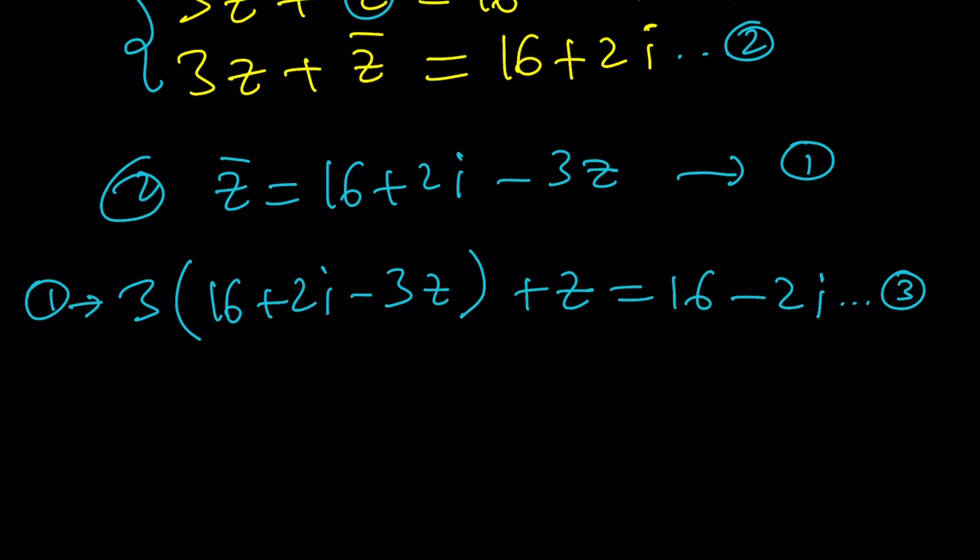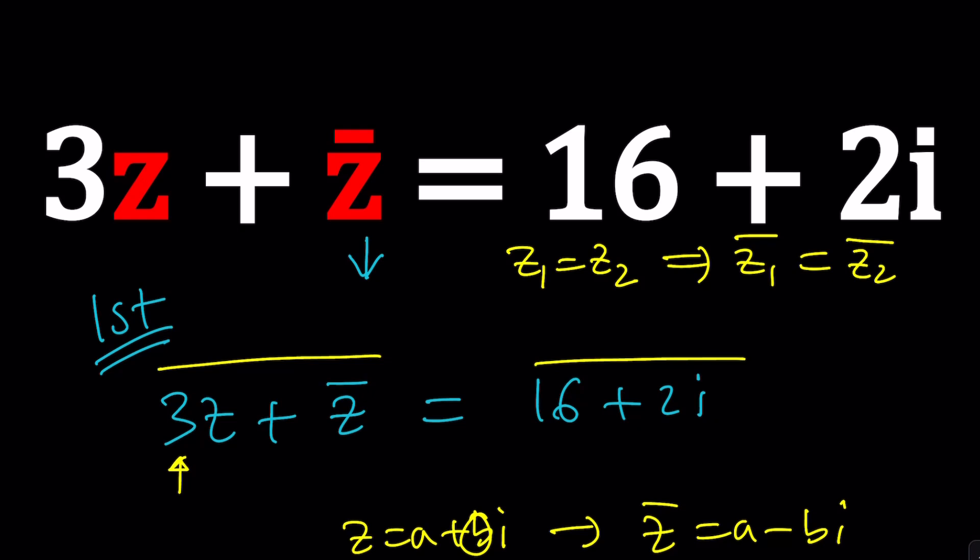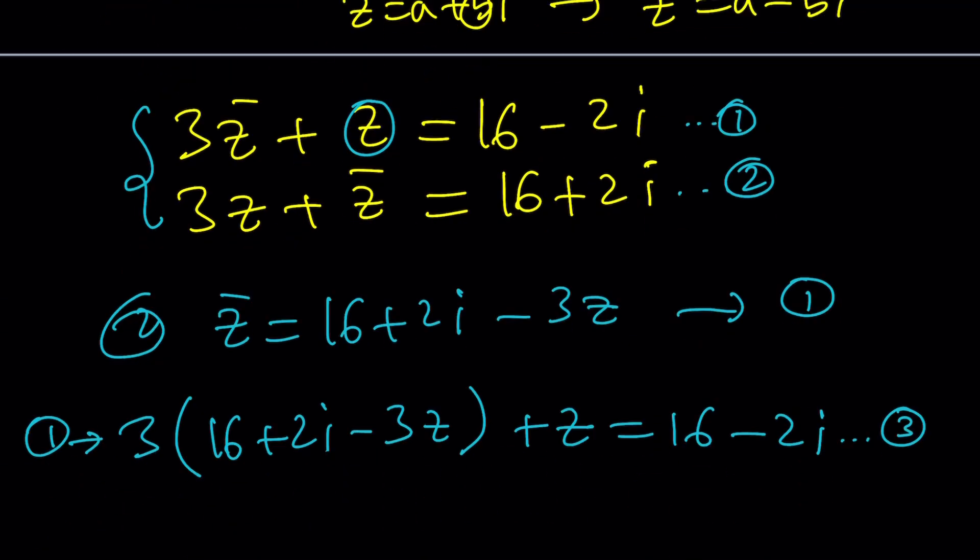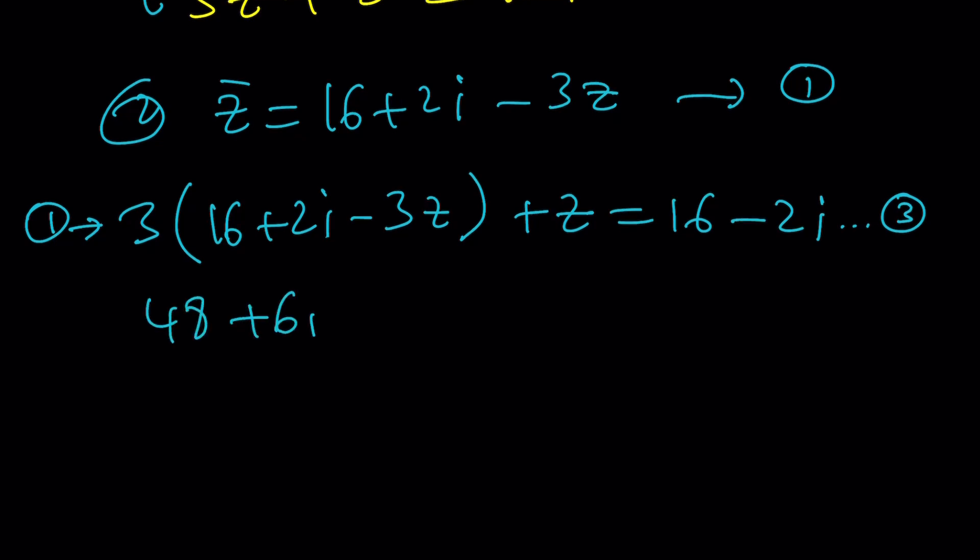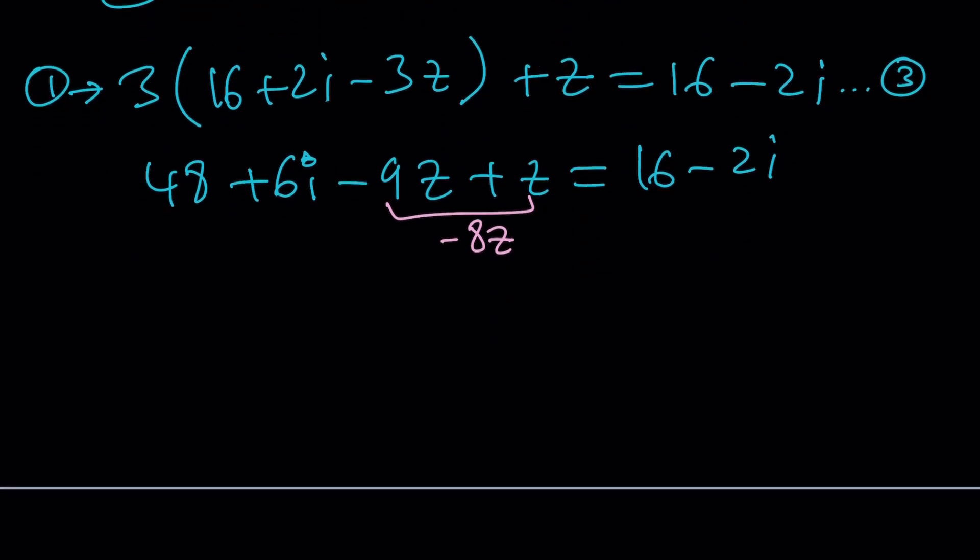Now this equation can be called the third equation which is nice. You know why? Because it actually only contains z as a variable. If you look at the original problem we seemingly have two variables, not really but let's just pretend z and z bar. So here we have a single variable which is nice and we were trying to solve for z. Let's go ahead and distribute this and simplify 48 plus 6i and then minus 9z plus z equals 16 minus 2i.